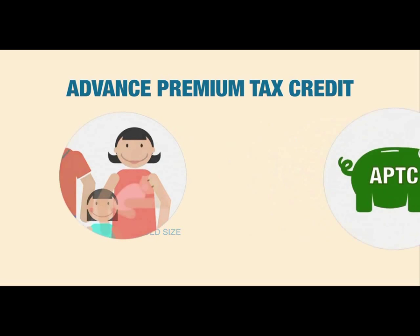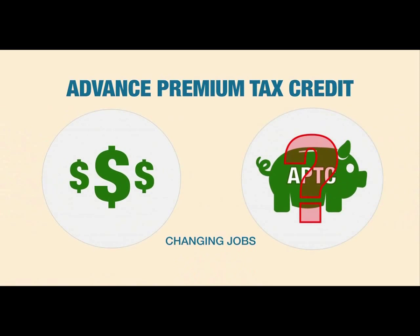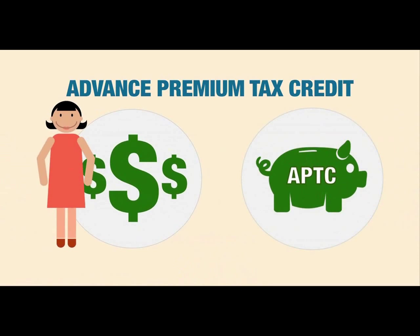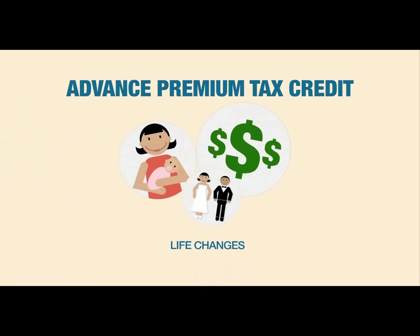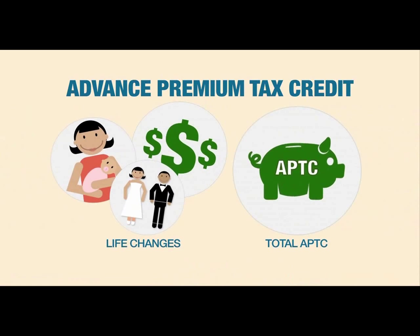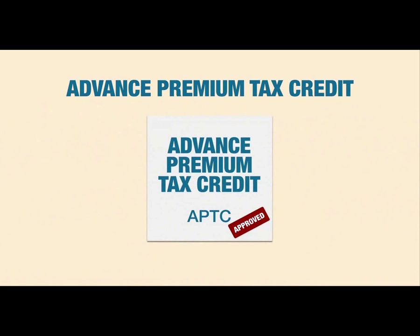If you make more than expected, your Advanced Premium Tax Credit will be lower and you might owe money at year's end. If you make less than expected, you may get a refund. If you report changes when they happen on the site, your tax credit calculations will be updated automatically. Any way you use it, the APTC will still give you a break on the cost of health insurance.